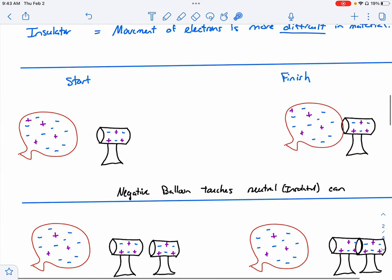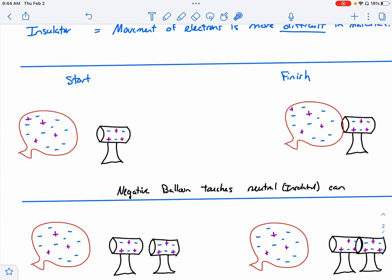we can help with our knowledge of conductors and insulators and these ideas of conduction. We can make some predictions about what charge objects will have after a certain scenario. Okay. So here's a simple one. We have a balloon over here, and we have a conducting can, so something made of metal, on an insulating stand.